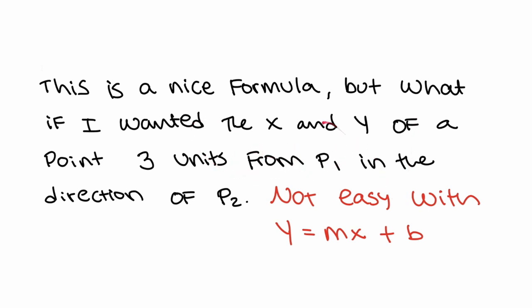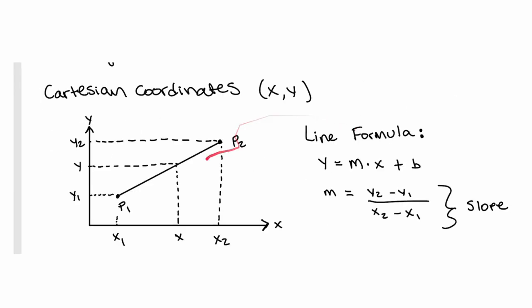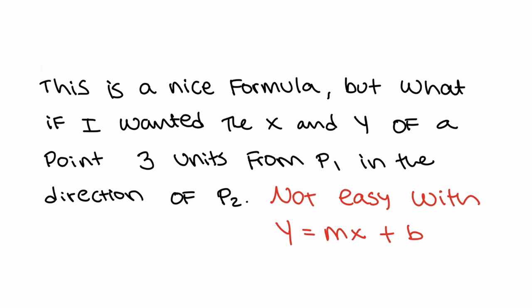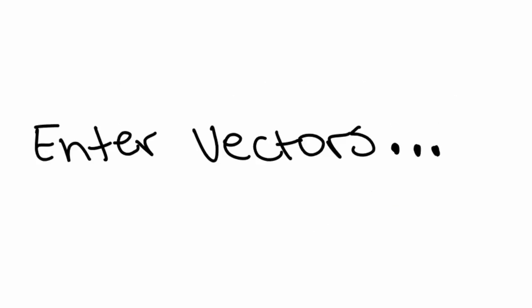But if I wanted to know the X and Y coordinate of a point that was 3 units away from P1 in the direction of P2 — like, moving along the line for 3 units, what are the X and Y coordinates? That's a very difficult thing to do with Y equals MX plus B. And if you want to go into 3D coordinates, it's even harder using these equations. So this is where vectors come in, because what's very difficult to solve algebraically is something that's very simple to do with vectors.